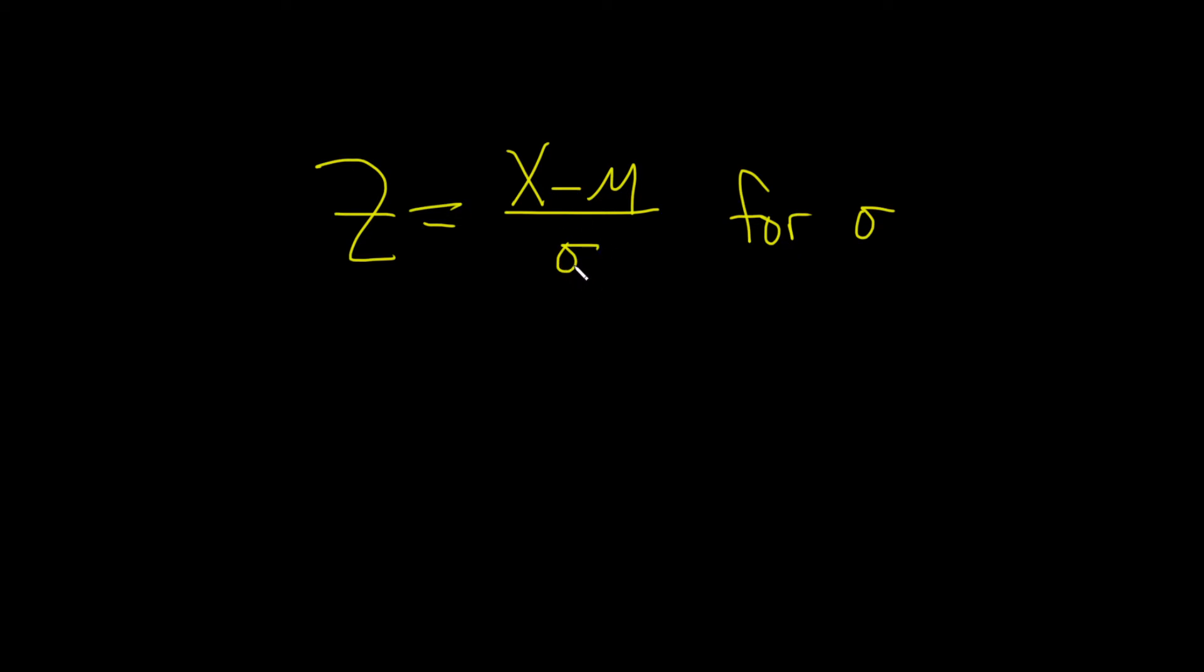So we can start by multiplying both sides by sigma. So I'll put a sigma here and I'll put one here like this. So now these cancel. So we have sigma times z equals x minus mu.